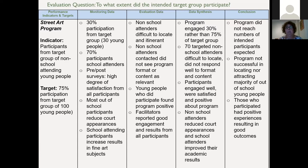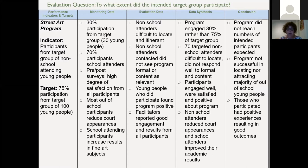This is the dispassionate process of trying to synthesise the data to reach a conclusion. As a result of synthesis, the program engaged 30% rather than 75% of the target group. The 70% targeted non-school attenders were difficult to locate and did not respond well to the format and content. The participants engaged well, were satisfied and positive, and non-school attenders reduced court appearances while school attenders improved their academic results.